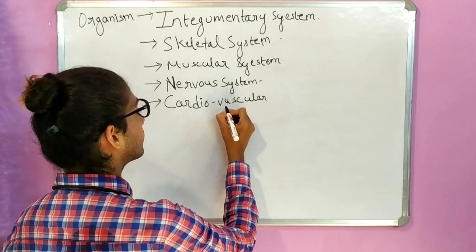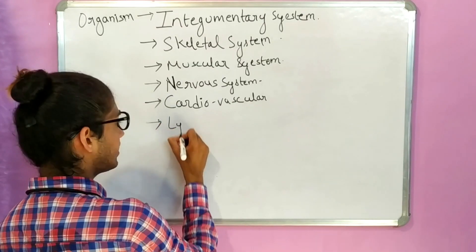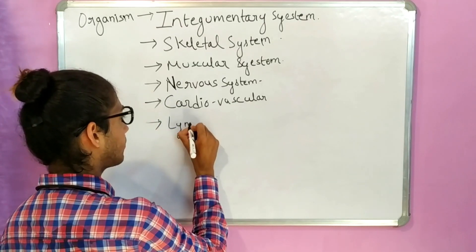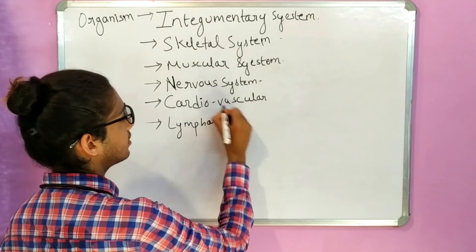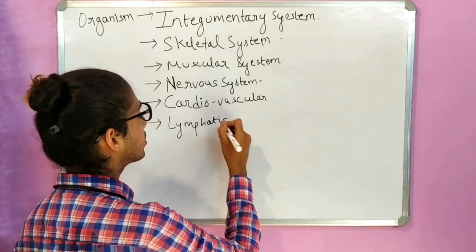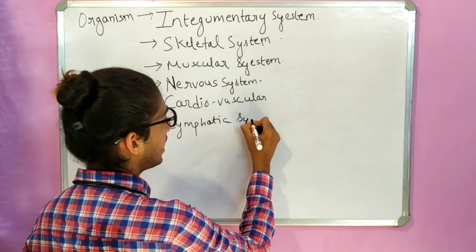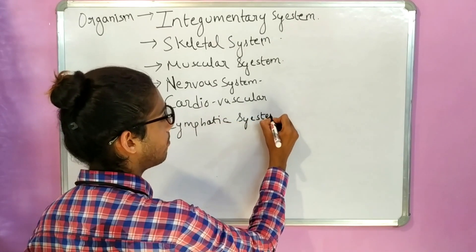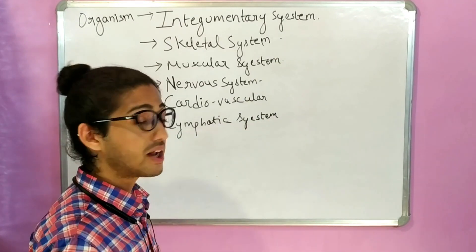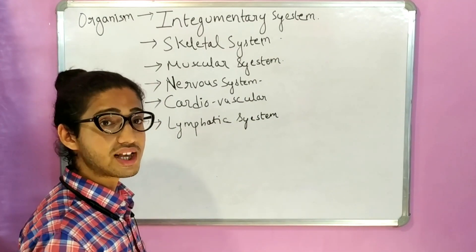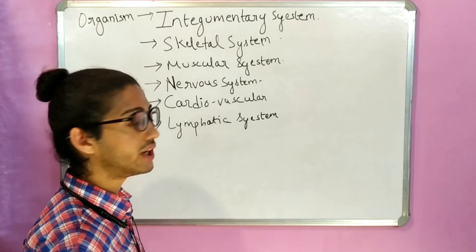Then you have the lymphatic system. The blood that is pumped needs to return, and the lymphatic system helps in the return of blood. It also consists of white blood cells and other immune cells, contributing towards the entire immunity of the body.